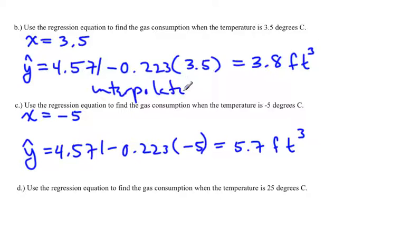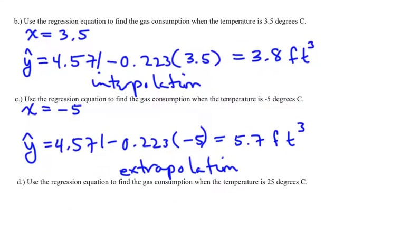That means that we actually found a y value from an x value that was inside the range of the original data. Whereas this part c, this negative 5 is extrapolation because the x value was actually outside the original data. Extrapolation is usually not as accurate as interpolation. Let's try one more.